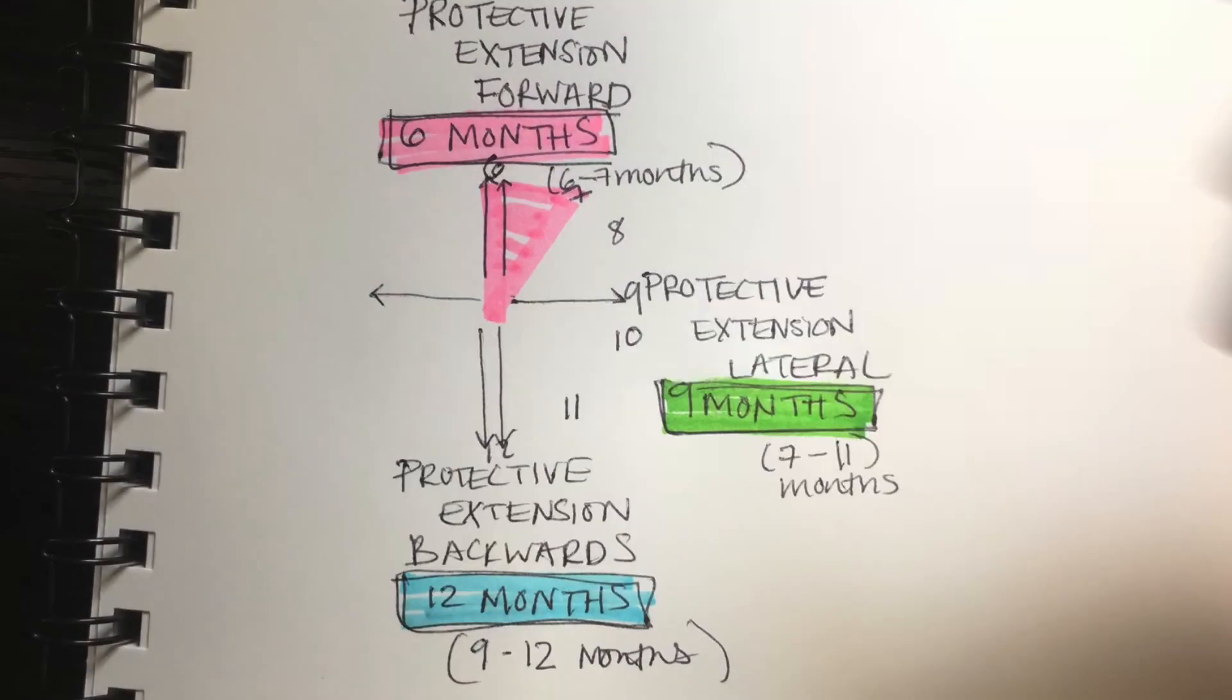So starting out with the protective extension forward reflex, you'll start seeing a kid develop this reflex from about 6 months to 7 months.